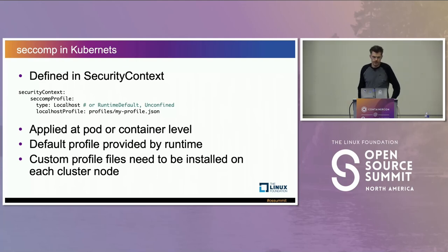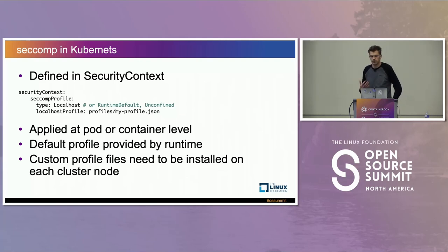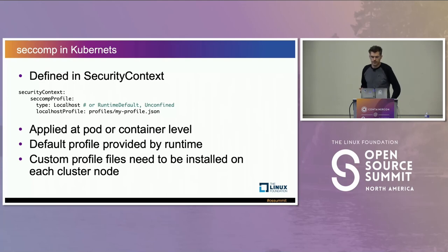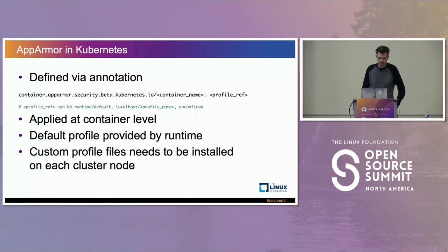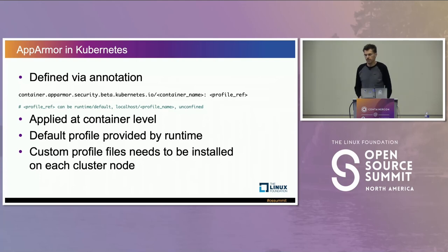How can we configure seccomp in Kubernetes? Seccomp can be configured in the security context — either using the runtime default or a custom profile. A custom profile needs to be deployed on each cluster node, and when setting up the security context of a container or pod we reference this profile. AppArmor, on the other hand, is annotation-driven: you just apply an annotation to the pod to define a custom AppArmor profile. In both cases the profile needs to be available on the underlying node.